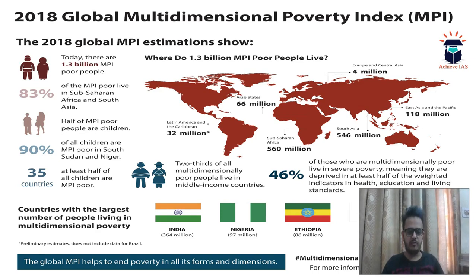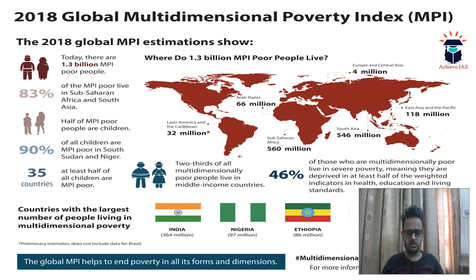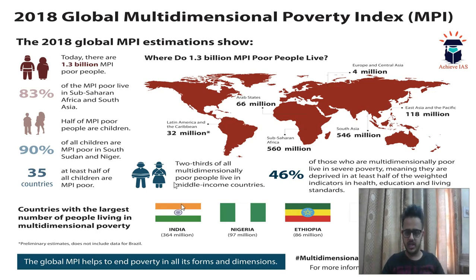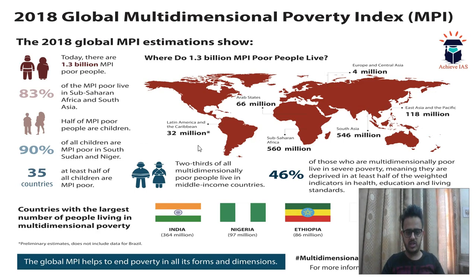Two-thirds of all multi-dimensionally poor people live in middle-income countries. Europe and Central Asia has only 4 million poor, while South Asia has 546 million. Latin America and the Caribbean has 32 million, and the Arab states have 66 million.